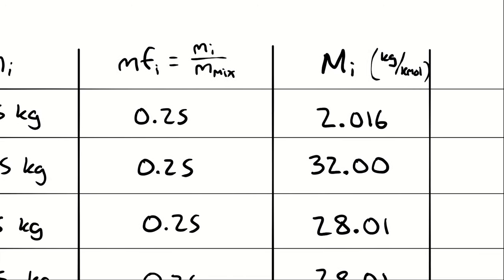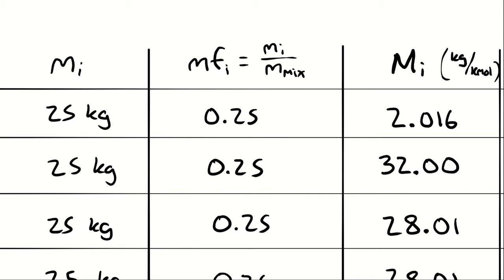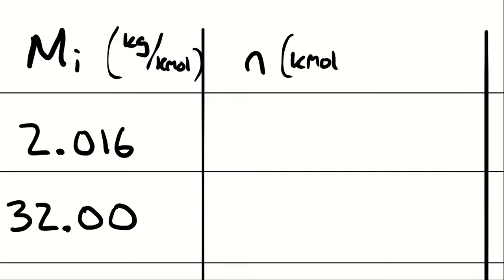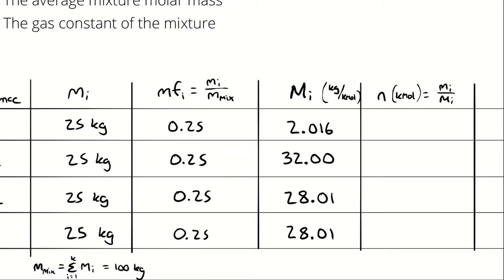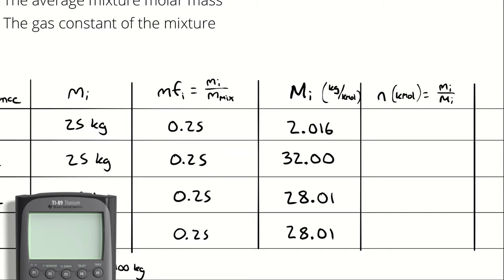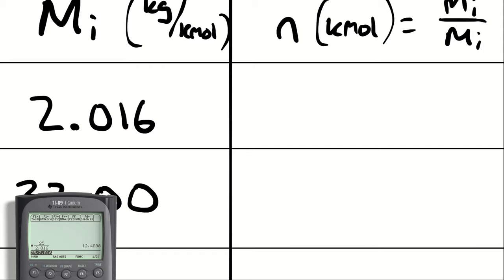The molar mass represents how many kilograms are in a kilomole of substance. To calculate the number of moles of each species, we take the mass of the substance divided by the molar mass. The number of moles is abbreviated with lowercase n. For hydrogen: 25 ÷ 2.016 = 12.4 kilomoles.